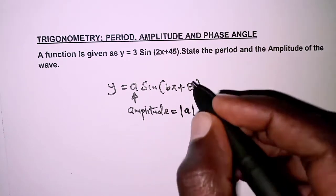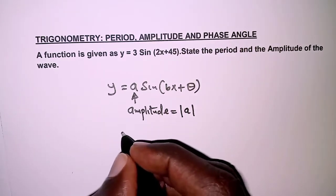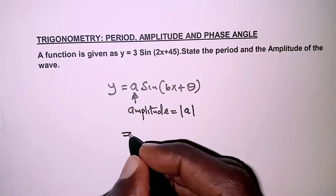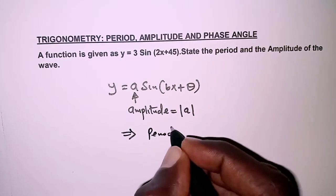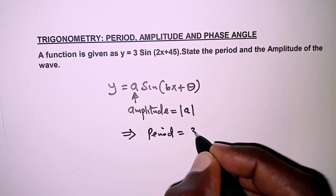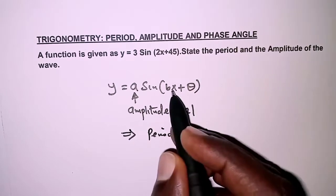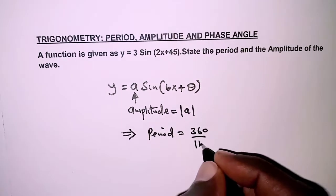And then we may also say period is simply 360 over the coefficient of x here, that is the absolute value.